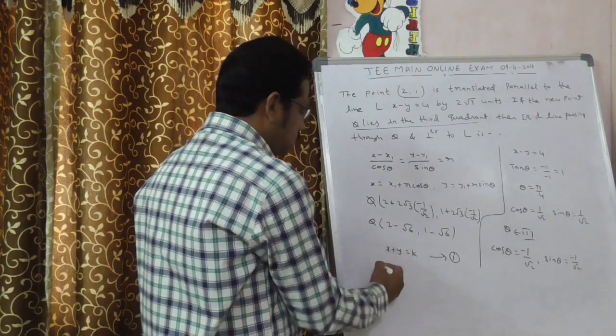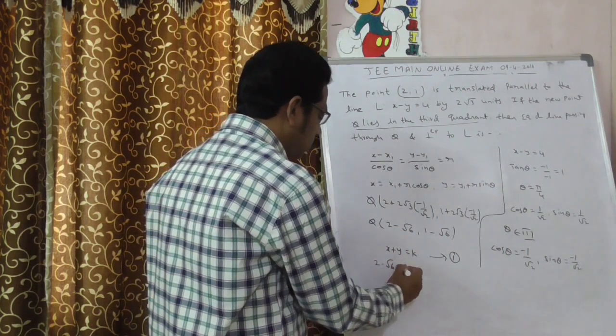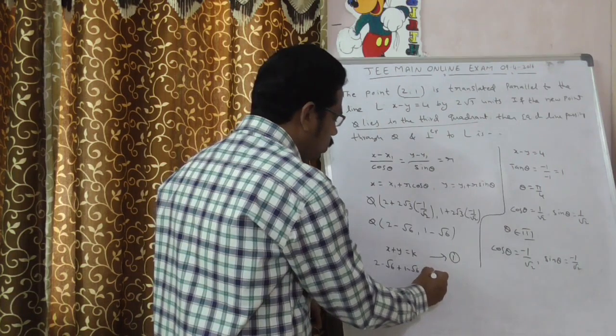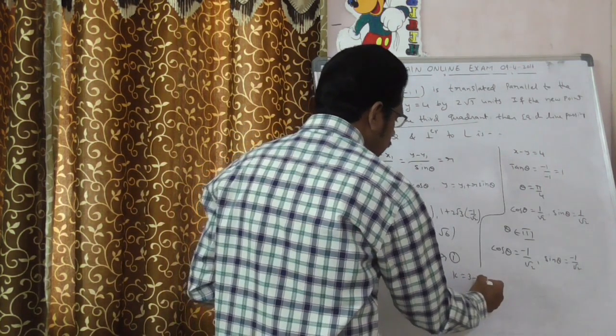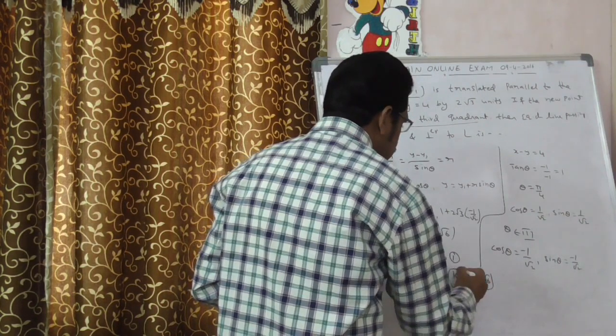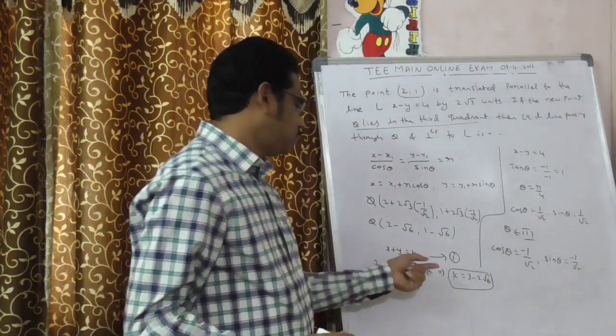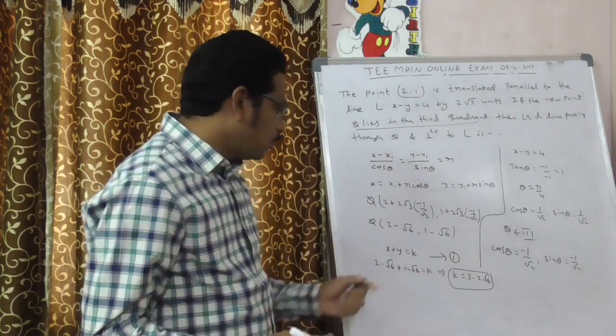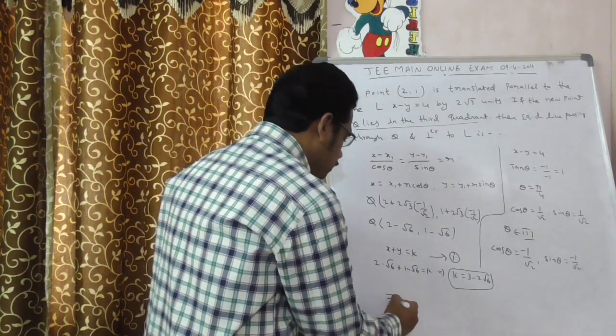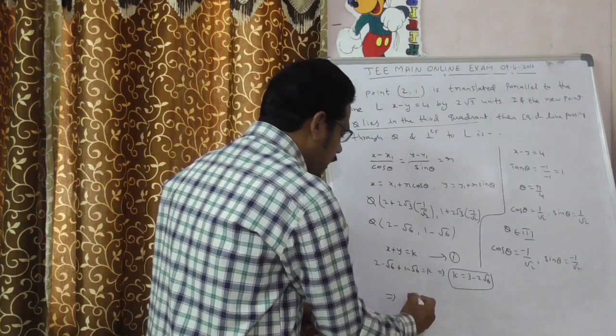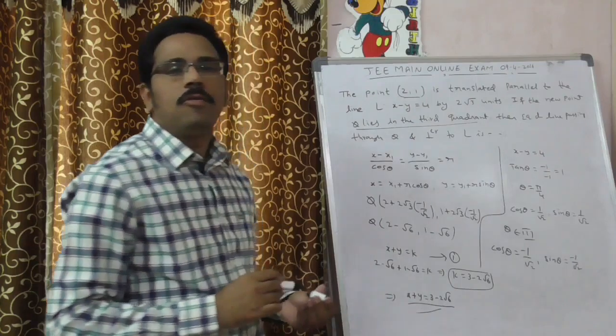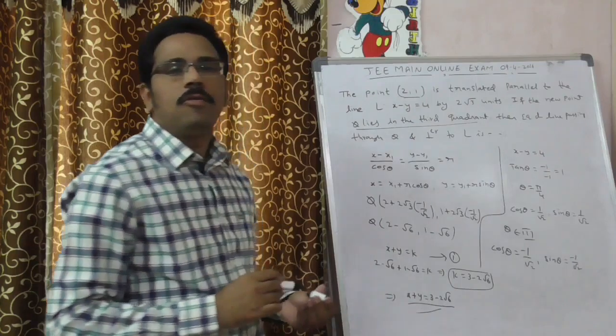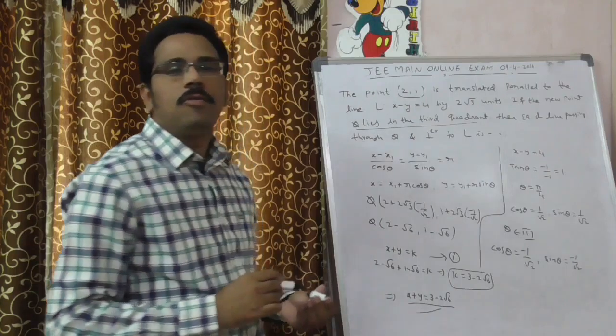This line passing through which point? Q point. Now, substitute the q value here. That is x is 2 minus root 6, whereas y is 1 minus root 6 is equal to k. That implies k is equal to 3 minus 2 root 6. If k equal to 3 minus 2 root 6, what is the required line? That implies substitute k value in 1. That is x plus y is equal to 3 minus 2 root 6. Is our final required state.